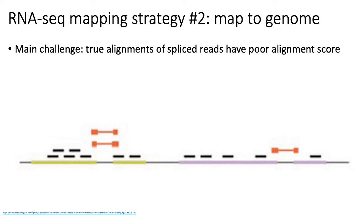The problem with splice junction reads is that their true alignments back to the genome involve large gaps, because part of the read maps to the three-prime end of one exon and the other part maps to the five-prime end of another exon. Because exons are separated by potentially large introns, those gaps heavily penalize the alignment, making it essentially impossible to find those gapped alignments. So mapping to the genome means missing many alignments of splice-junction-spanning reads.